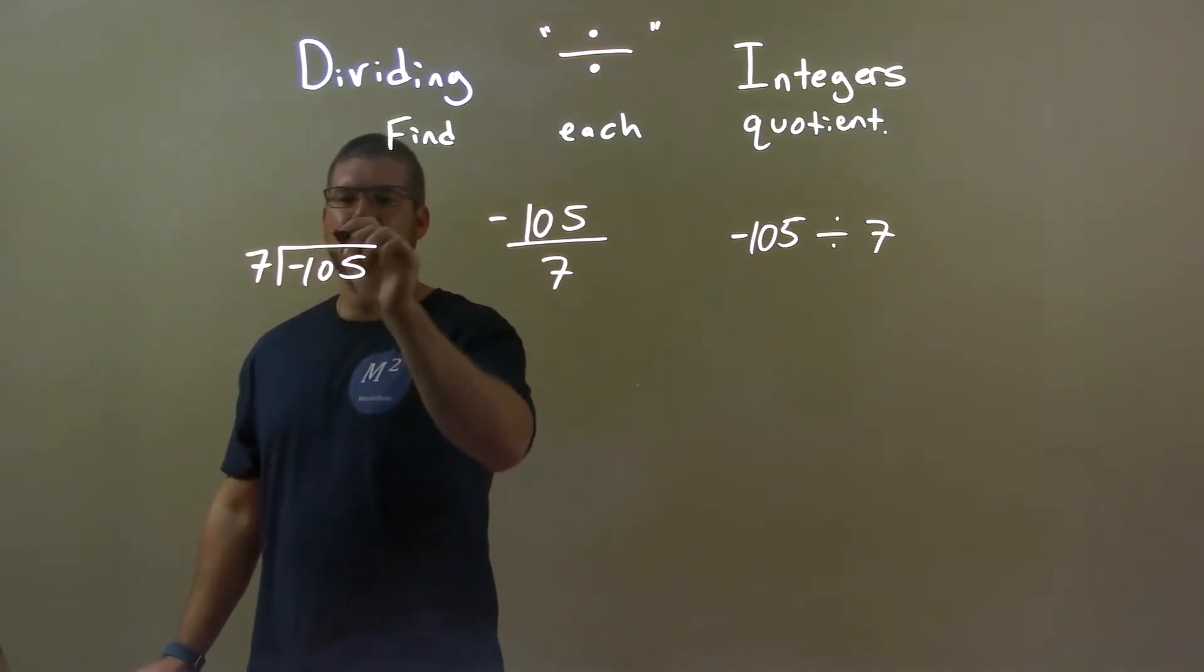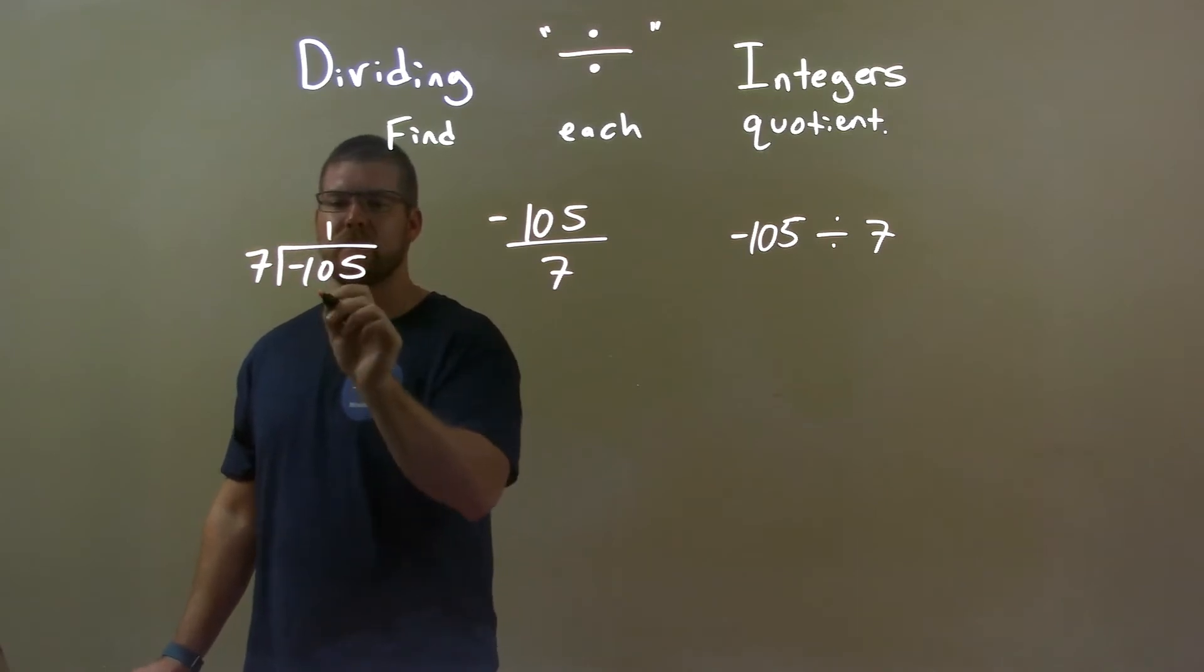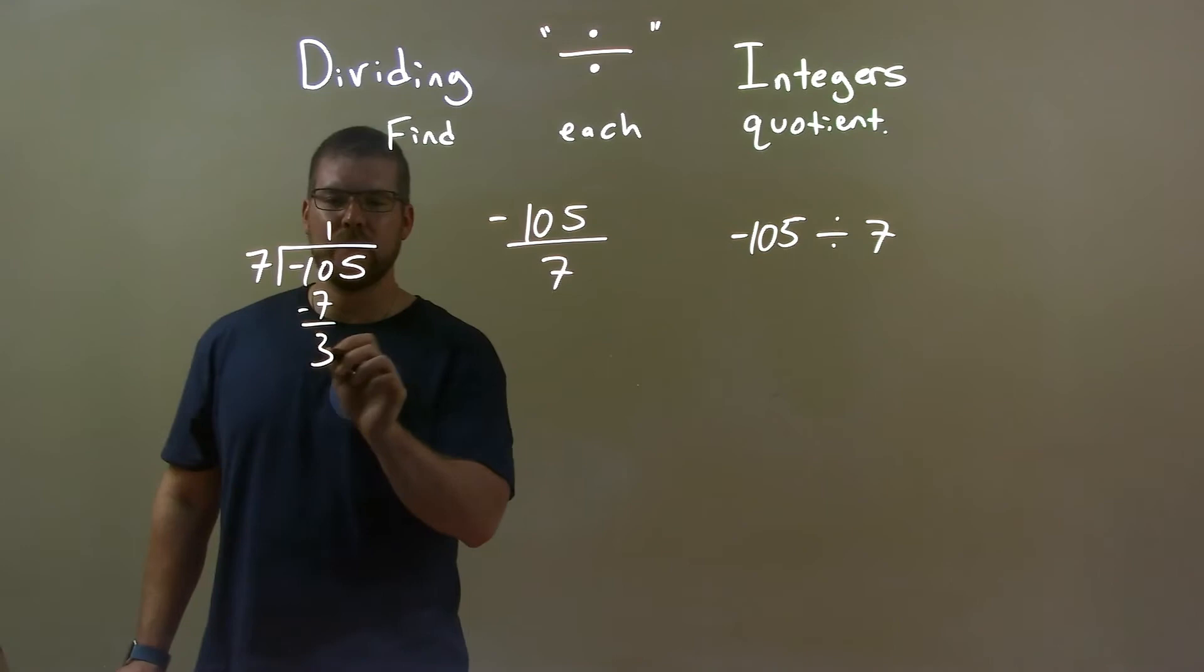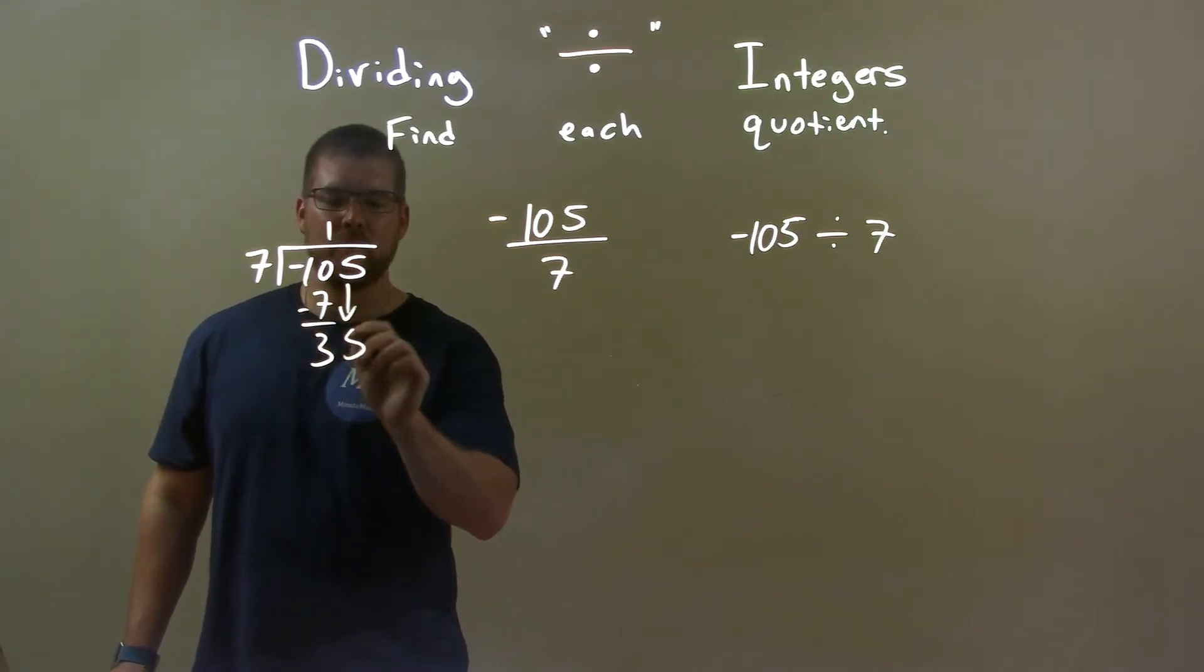7 goes into 10 one time. 1 times 7 is 7. Subtract. 10 minus 7 is 3. Bring down the 5.